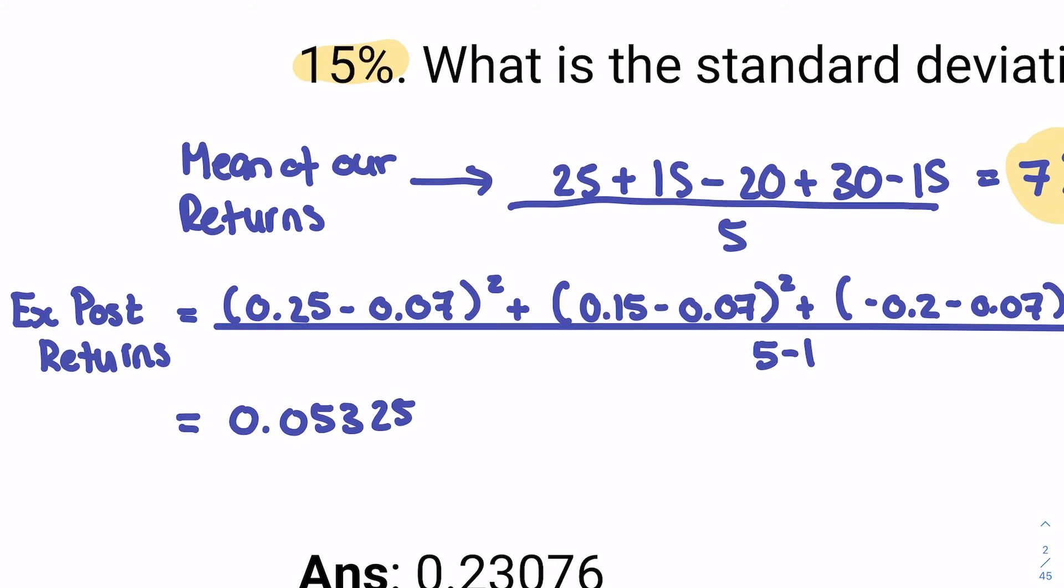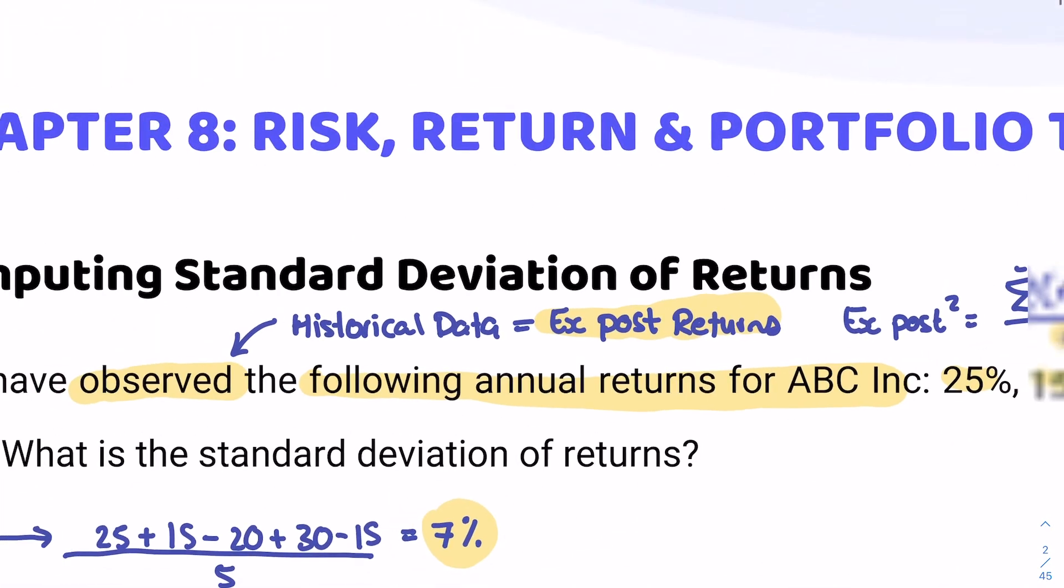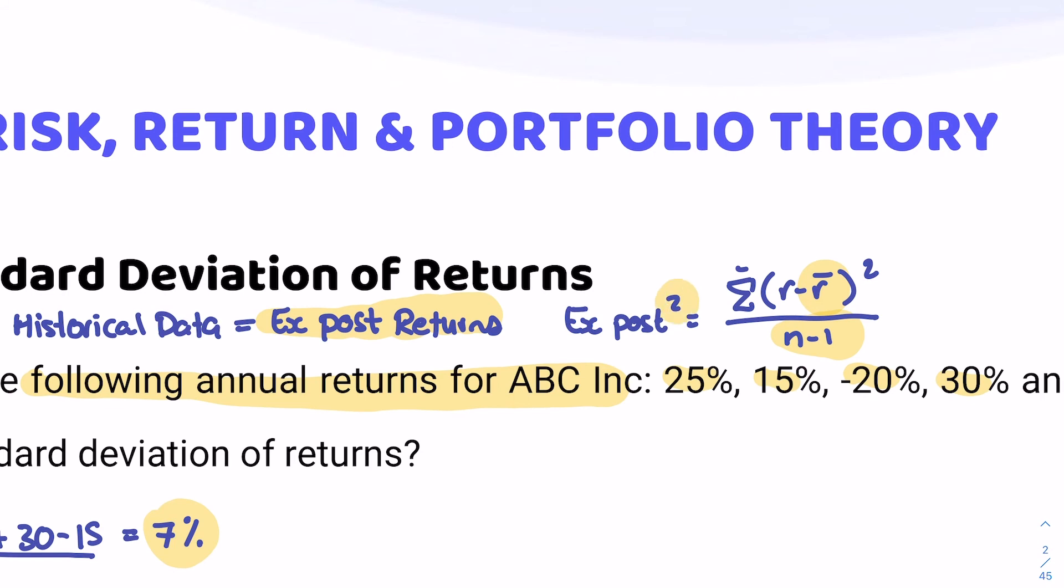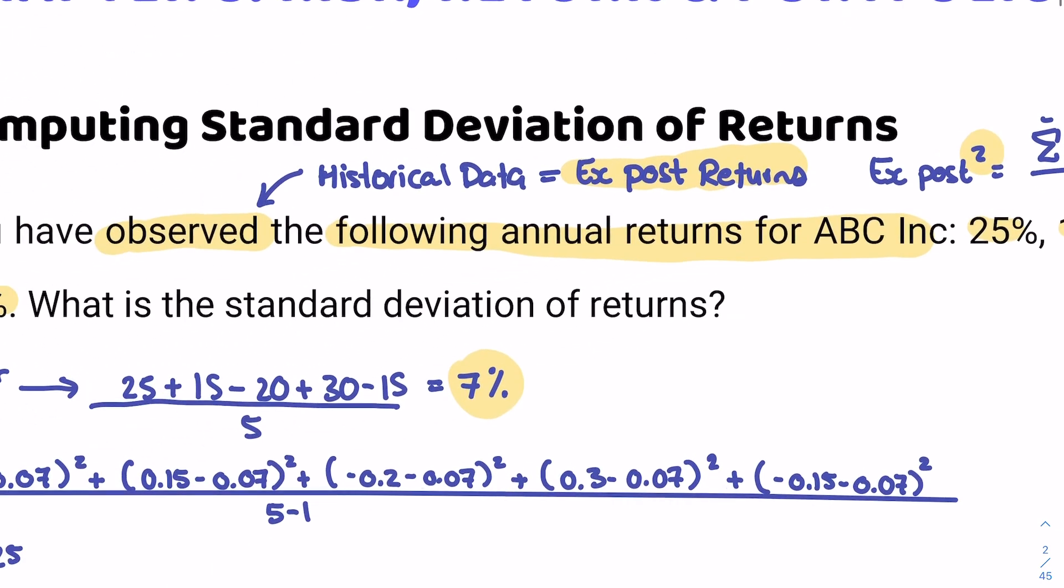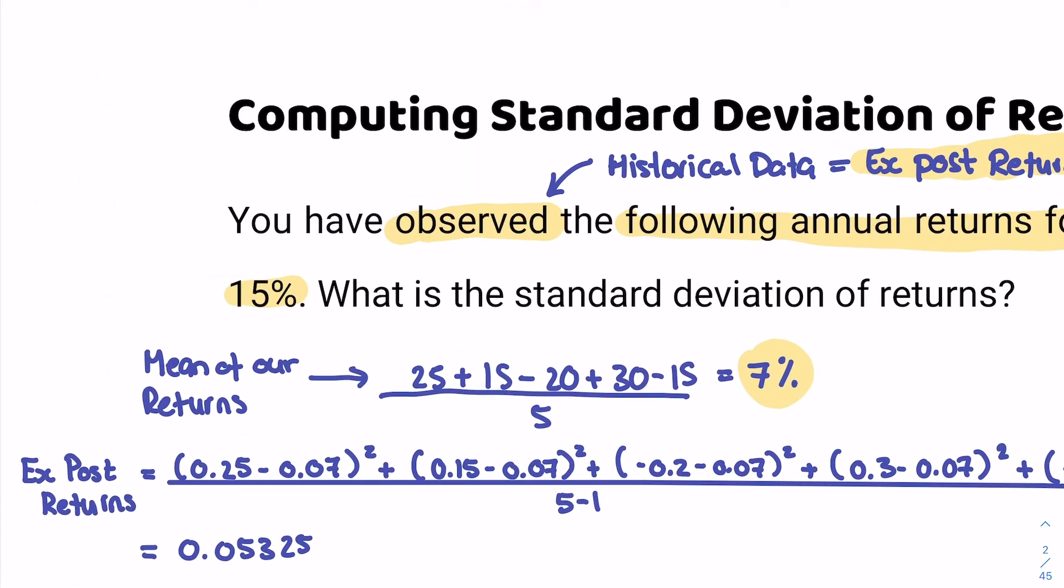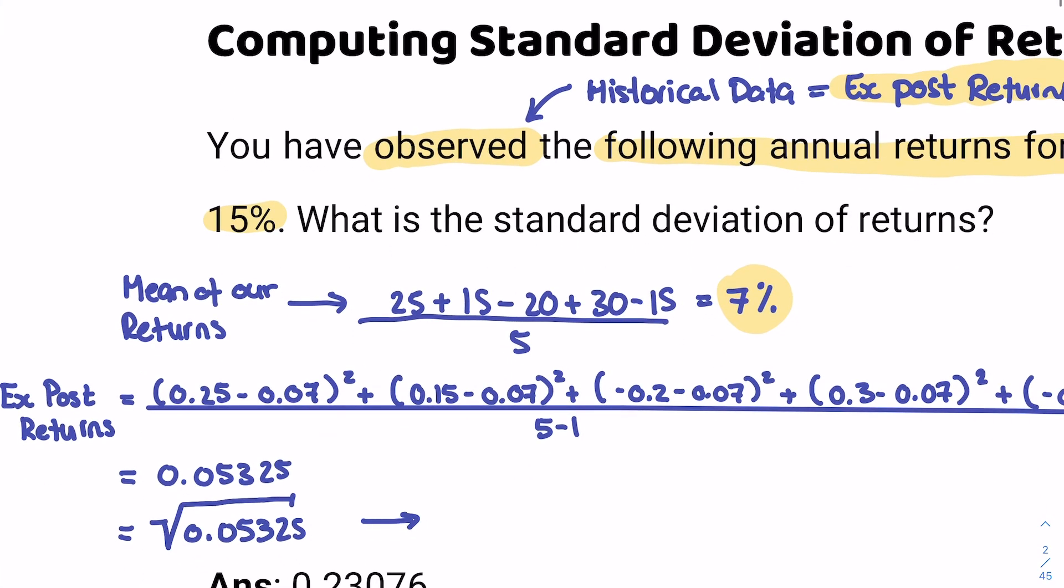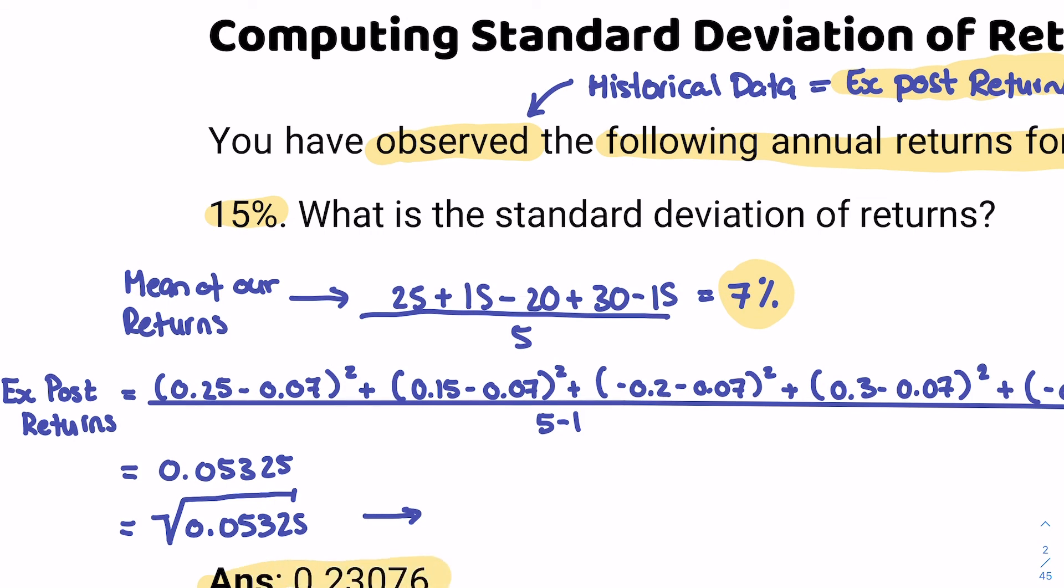Now, what I need you to remember is that our ex-post formula, as you can notice here, is squared. Therefore, our ex-post formula actually gives us the variance. It gives us our variance, so you need to remember that you need to square root your value at the end to find your actual standard deviation of returns. In this question, they did not ask you about your variance, they asked you for the standard deviation of returns. Therefore, in this scenario, you have to make sure to find your answer and square root it, such that you get the following answer: 23.076%. So that's how you find the standard deviation of returns.